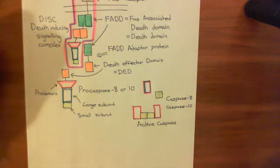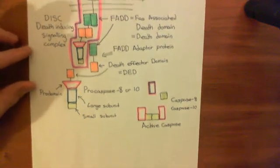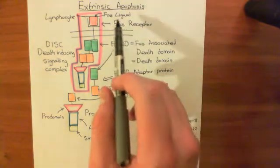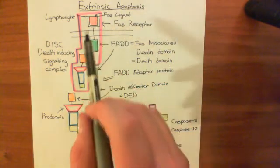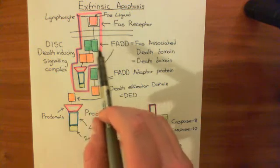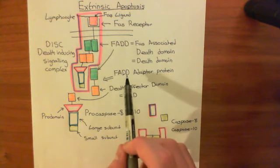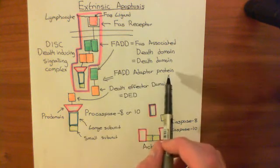So far in our video on extrinsic apoptosis, we have seen that the FAS ligand binding to the FAS receptor activates the FAS-associated death domain so that it can associate with another FAS-associated death domain on the FAD adapter protein.